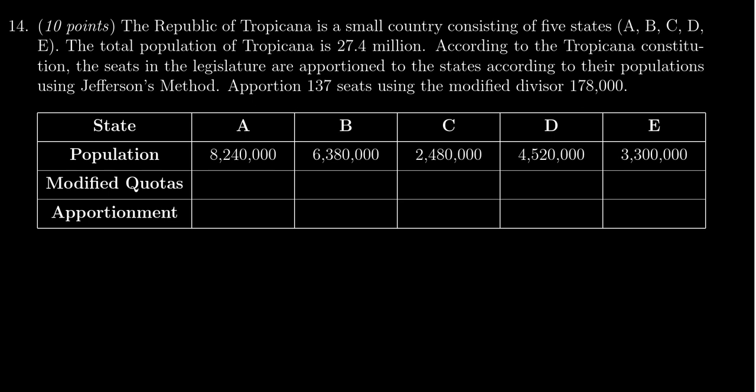We're going to take 8.24 million divided by 178,000 — feel free to use a calculator on that one — and you're going to end up with 46.29. For state B, 6.38 million divided by 178,000 is going to give you 35.84.